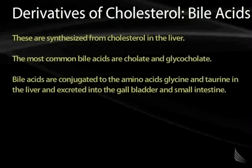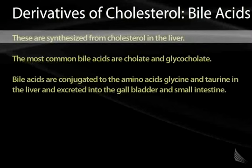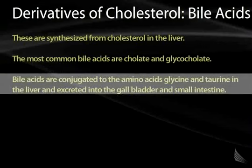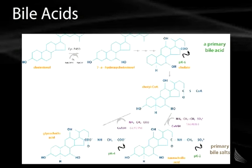Now we need to understand some derivatives of cholesterol. One of these is bile acids, synthesized from cholesterol in the liver. The most common bile acids are cholate and glycocholate. Bile acids are conjugated to the amino acids glycine and taurine in the liver, which makes them more soluble, and then they are excreted into the gallbladder and small intestine. Cholesterol is converted to 7-alpha-hydroxycholesterol, then to cholate, which can be converted to glycocholic acid and conjugated with amino acids to form conjugated bile salts.